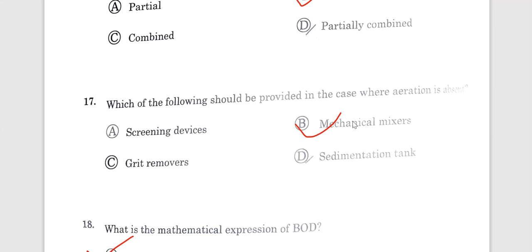Question number 16. Two sets of sewers are laid. Separate system or double collect set of sewers laid. Option B is the correct answer. Question 17. Which of the following should be provided in case where aeration is absent? The answer is mechanical mixers. Mechanical mixers when aeration is absent.